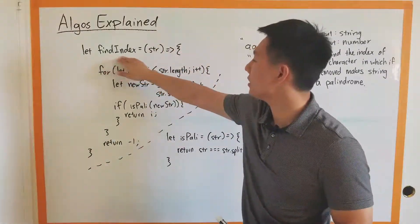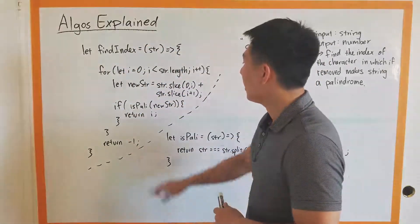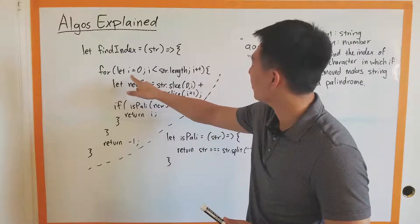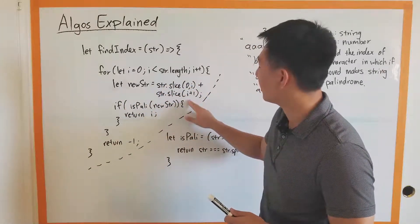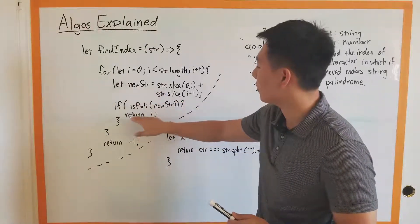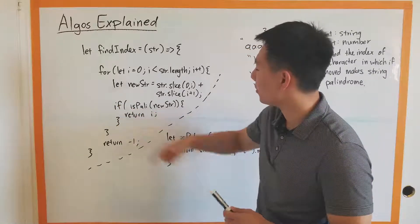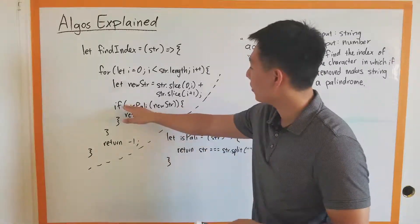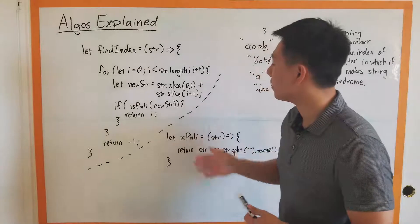We call our function findIndex, taking a string — this is in ES6. We're going through a for loop starting at i equals zero. We work with string.slice to remove a character, and we set that to a variable to keep things clean. We have a distinct if statement that says: using the helper function isPally, if it returns true, we return the index — indicating this new string with that character removed is a palindrome.